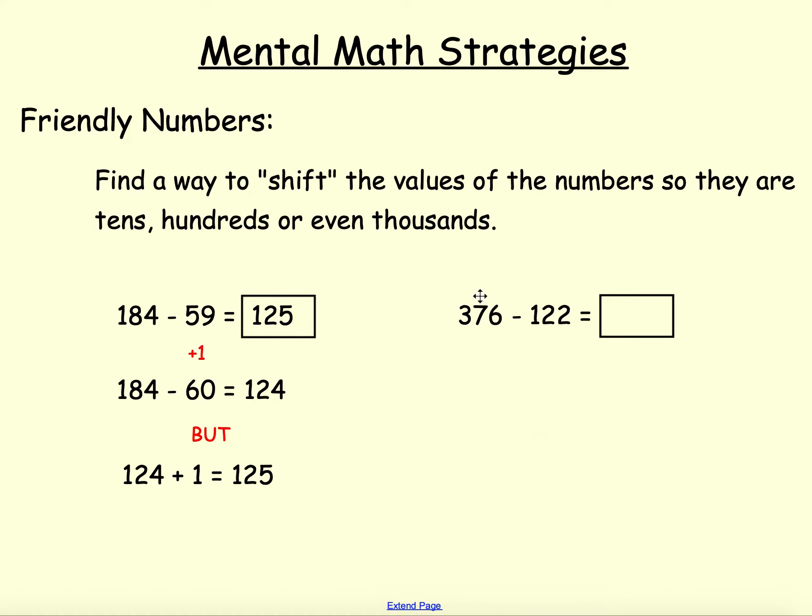Let's look at a slightly different problem. 376 minus 122. Now this time, I can make my 122 very easily to 120. So I can do 376 minus 120, and that would be 256. But I didn't take enough away. I only took away 120, and I was supposed to take away 122. So what do I need to do? I need to subtract two more. 256 minus 2 is 254. So my final answer, 376 minus 122 is 254.